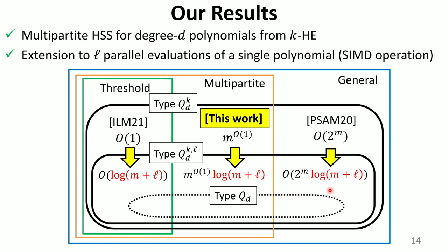As a drawback, however, the adversary structures of our HSS schemes must satisfy a stronger condition, which we call type QDKL. But it is still wider than the information-theoretic bound of type QD.